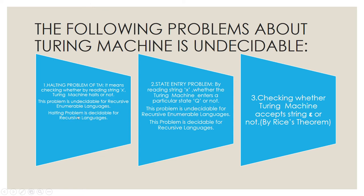The halting problem is decidable for recursive languages. Second is the state entry problem — as the name suggests, by reading string x, whether the Turing machine enters a particular state q or not. This problem is undecidable for recursively enumerable languages and decidable for recursive languages.